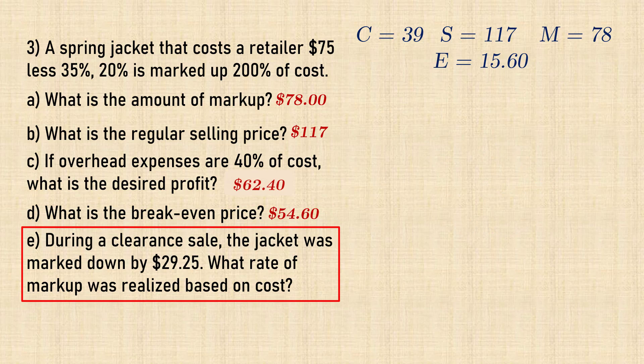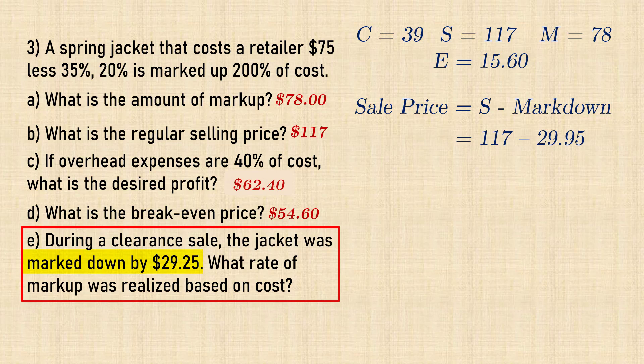Finally in Part E, the jacket was marked down $29.25. So the sale price equals regular selling price of $117 minus the amount of markdown, which gives $87.75.